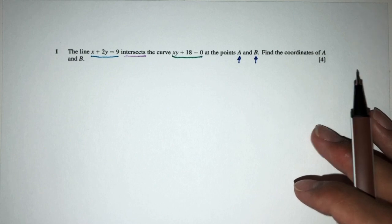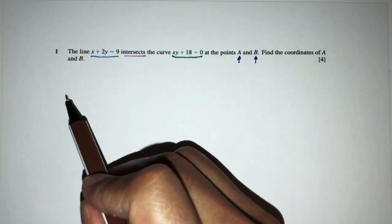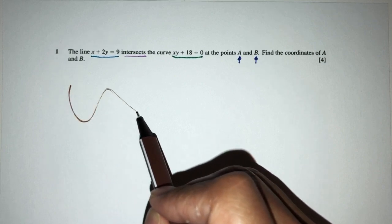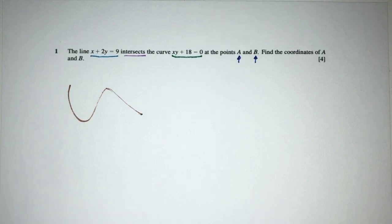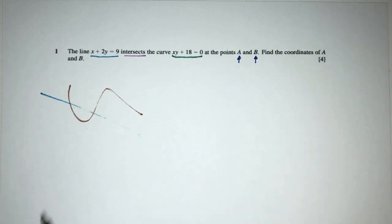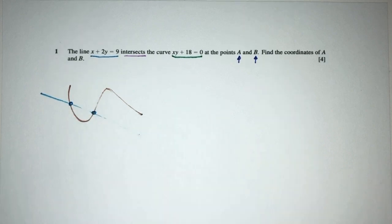The main idea is that, for example, here we have a curve. A curve could be in a shape. Let's say the shape is something like this. Now, this line is a straight line. Let's say the line looks like this. This will be the first point and the second point where they meet.